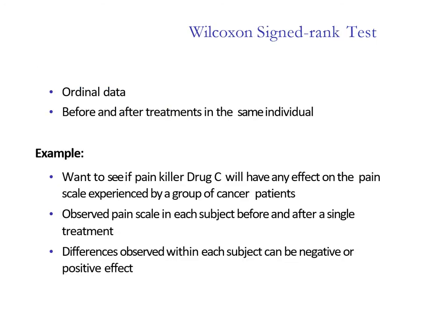The next test we are covering is the Wilcoxon Signed-Ranks test, which is the non-parametric equivalent of the paired t-test, also known as the dependent samples t-test. Usually we apply it in before-and-after scenarios. For example, we might want to see if a painkiller drug C has any effect on a group of patients — asking them to rate pain on a scale before and after treatment. You can also use it for before-and-after fitness programs or whether a seminar increases students' motivation.